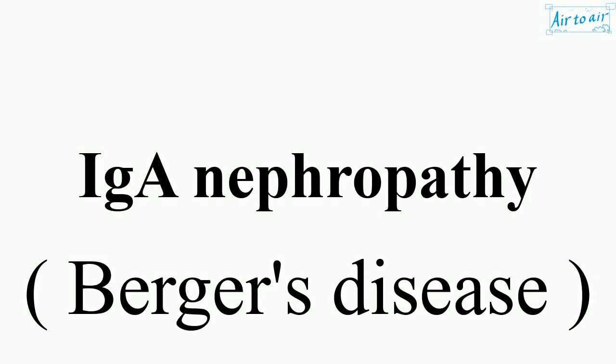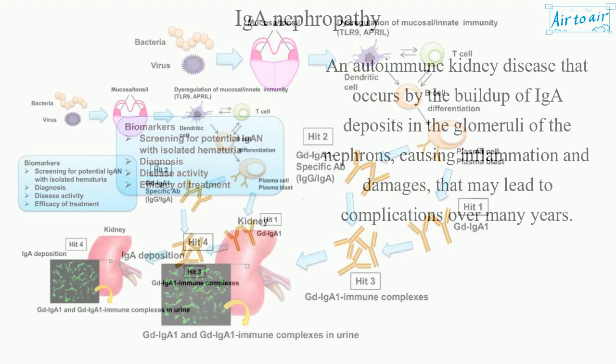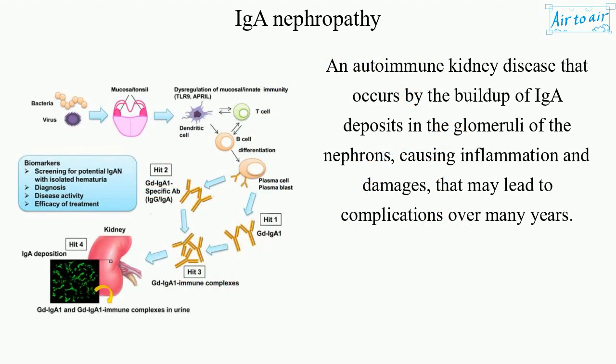IgA nephropathy. An autoimmune kidney disease that occurs by the buildup of IgA deposits in the glomeruli of the nephrons, causing inflammation and damage that may lead to complications over many years.